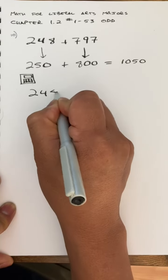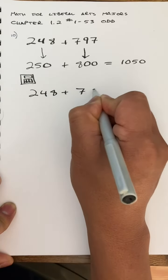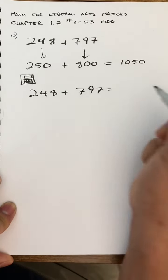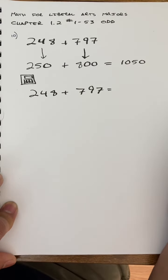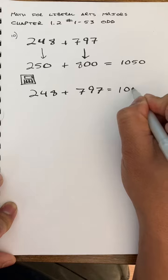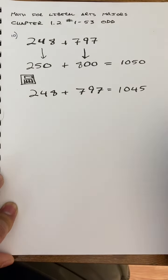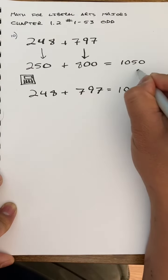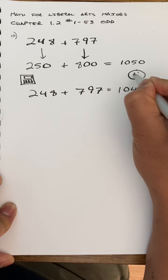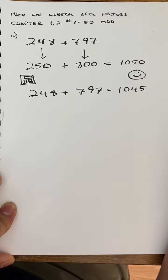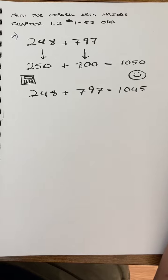Alexa, what is 248 plus 797? Alexa says 1045. And I'm going to draw a happy face right there because my estimate and the actual answer are very close. That's it.